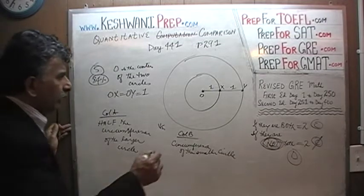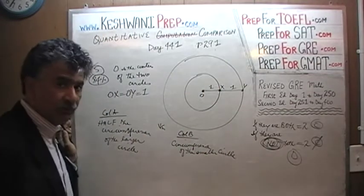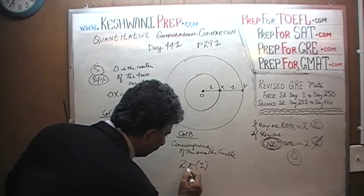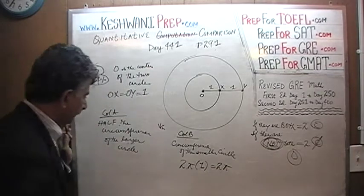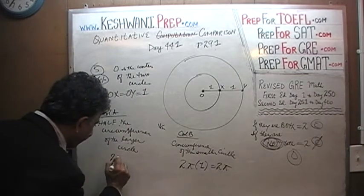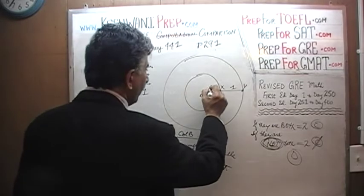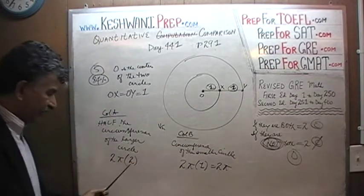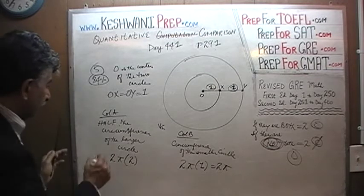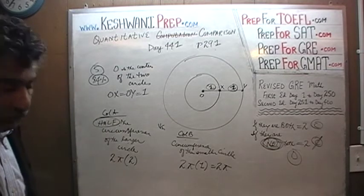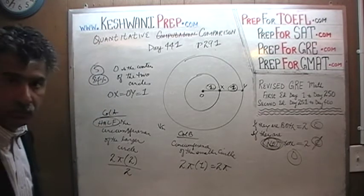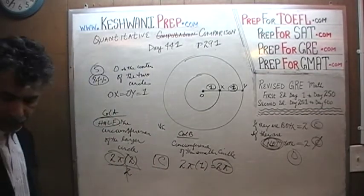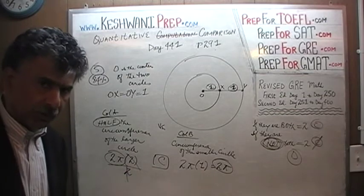The radius of the small circle is 1, so its circumference is 2π times 1, which is 2π. The circumference of the large circle is 2π times 2, which is 4π. But they are talking about half the circumference of the large circle, so we divide by 2 — the 2 cancels and we get 2π. So we end up with 2π versus 2π. The answer is C. I will see you tomorrow. Bye now.